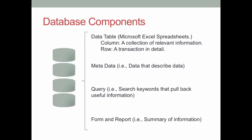The second component of a database is metadata. Metadata is information that describes the properties of the data tables, data values, and the database. For instance, if you have a last name column and you specify that the maximum number of characters each cell can hold is 20, then the value 20 is metadata — it describes how many characters the user can input. The other components are queries, forms, and reports. A query is a process of looking for answers in the database using certain keywords or standards. A form is an interface for users to input data, and reports are the analysis results from the database.